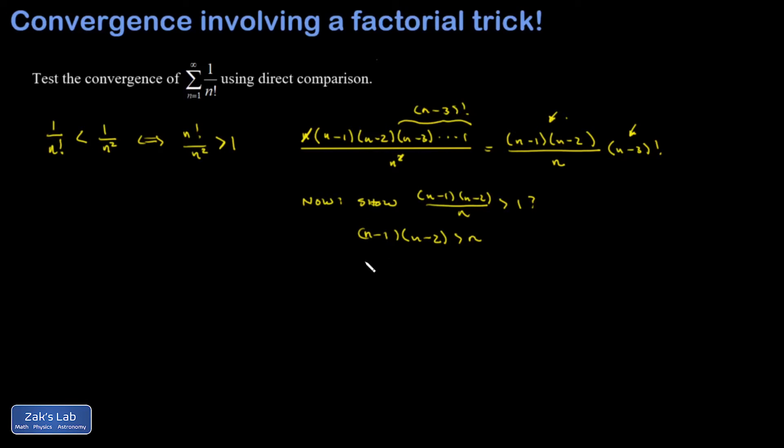So to finish the proof, this is all equivalent to showing that n minus 1 times n minus 2 minus n is bigger than 0. And if I expand that...